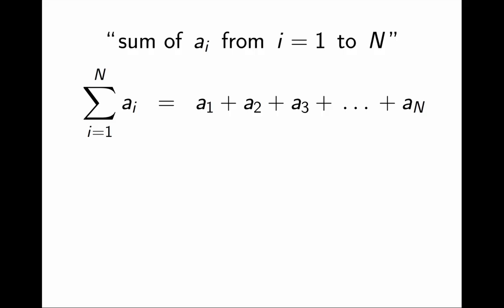Notice that we do not have to use i necessarily as the index. We could use other summation indices. For example, what could be the sum of a sub k from k equals 1 to n? It could be the sum a1 plus a2 plus a3 and so on, all the way to aN. In other words, it could be exactly the same sum.